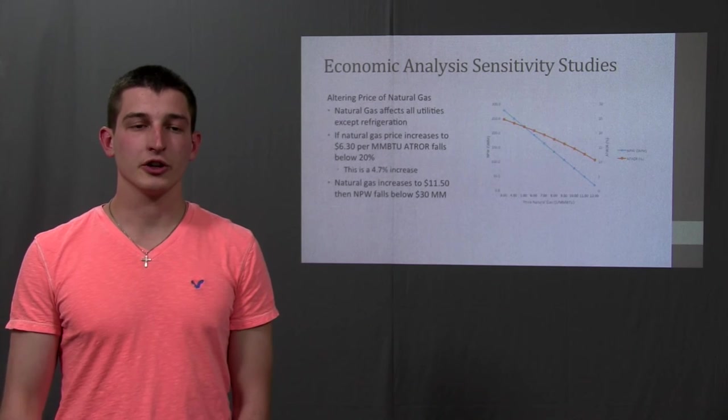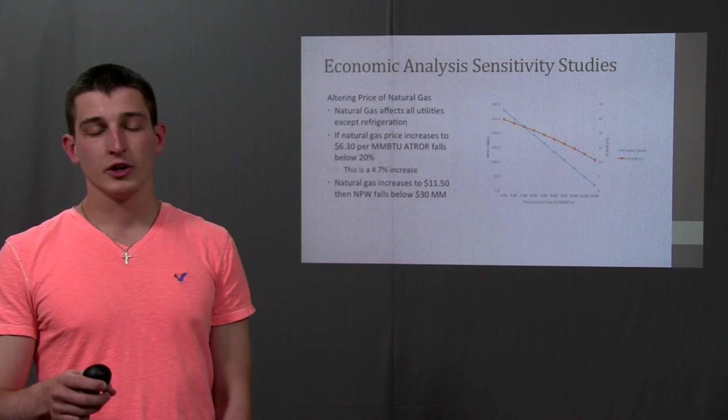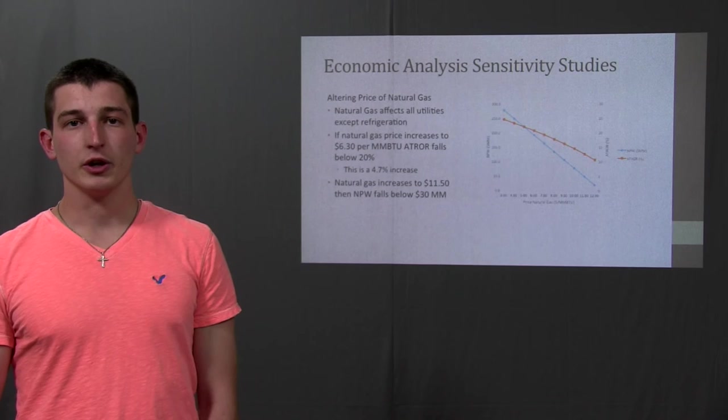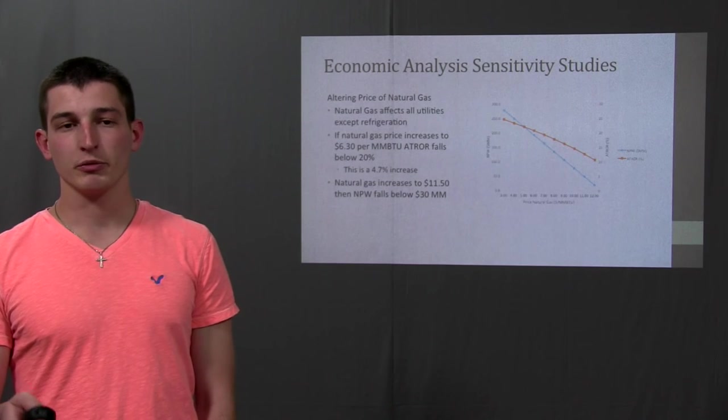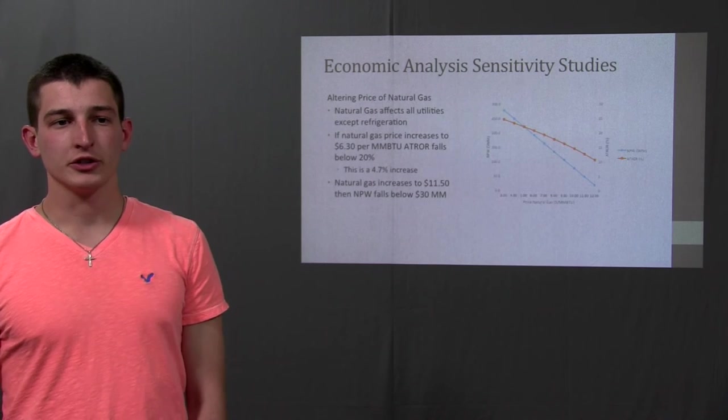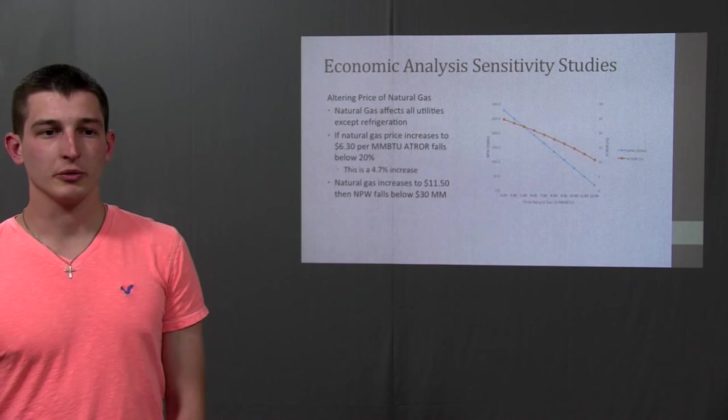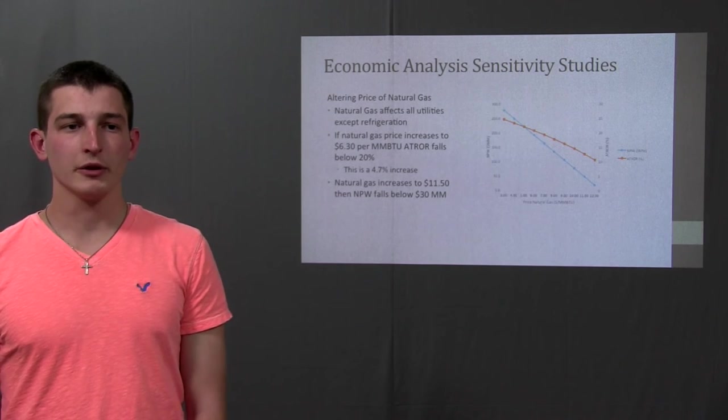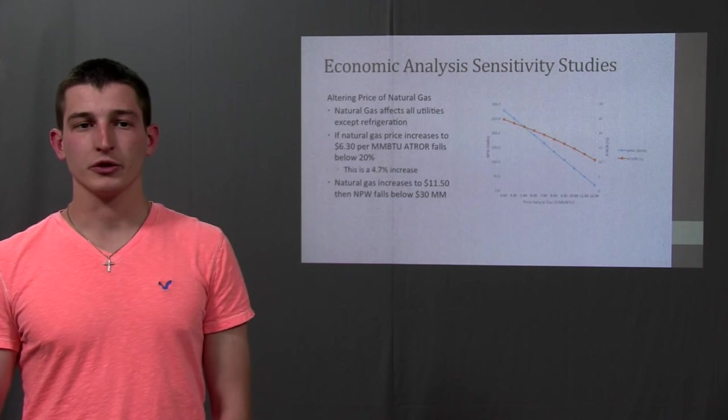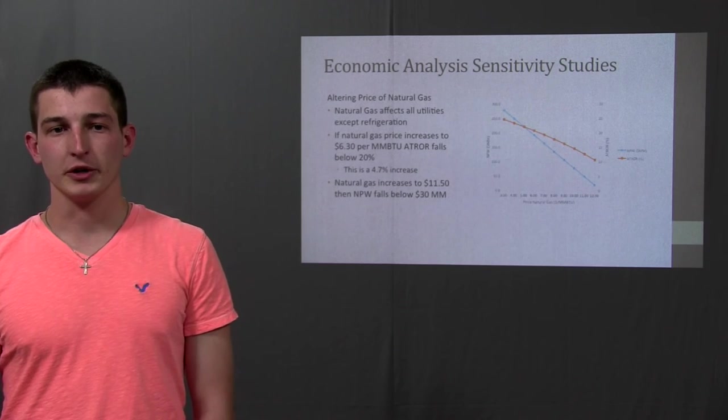Another sensitivity study that was done was altering the price of natural gas. This sensitivity study was done because this affected all the utilities. So the cold water streams, the high pressure streams, the middle pressure streams, and the low pressure streams. Again, if natural gas increased to $6.30 per barrel, the ATRO would fall below 20%, which is a 4.7% increase. And it would take natural gas to increase to $11.5 per barrel for the net present worth to drop below 30 million. So the price of our utilities does make a big difference in the plant.